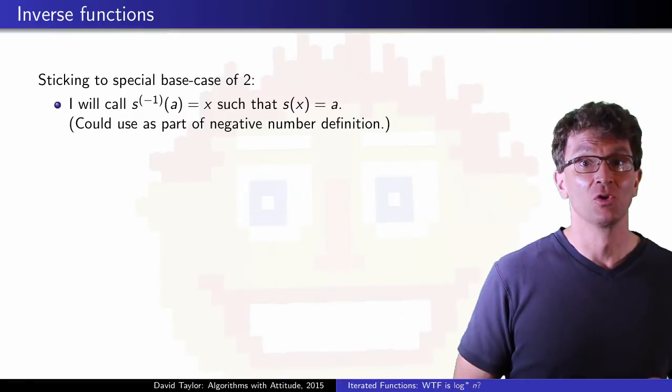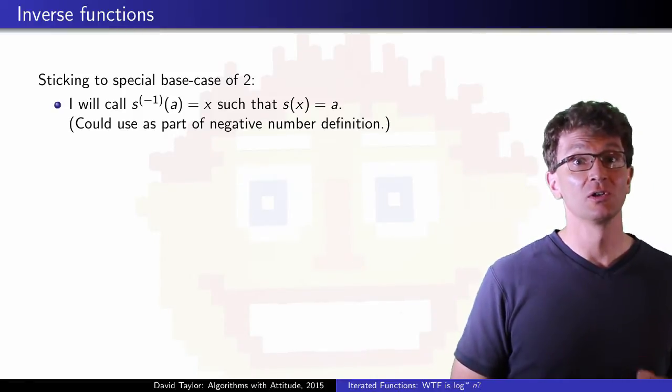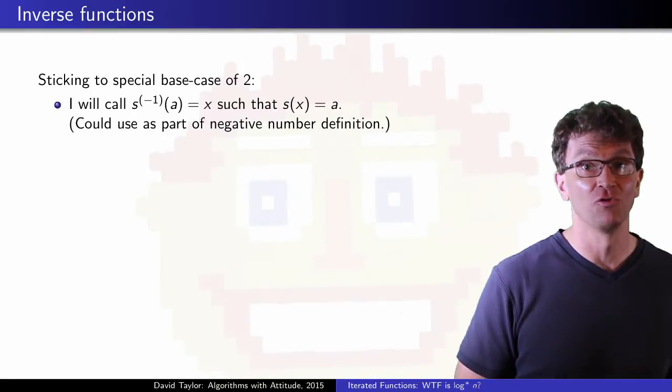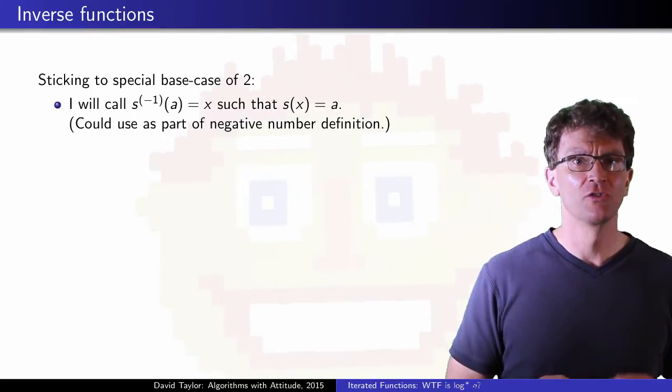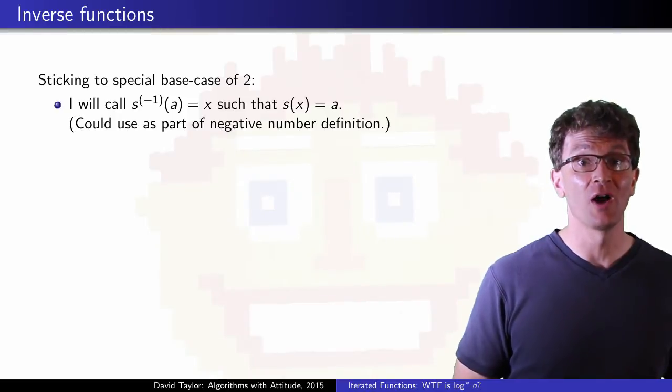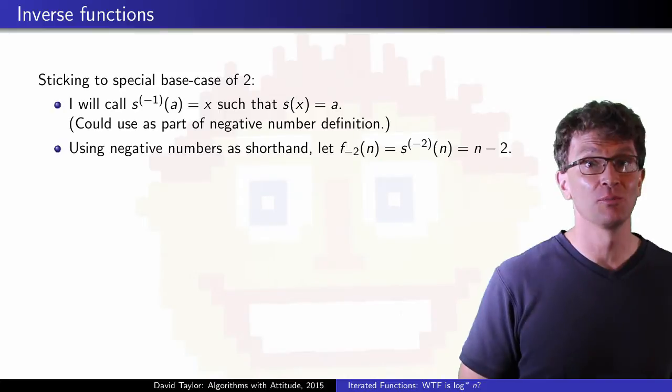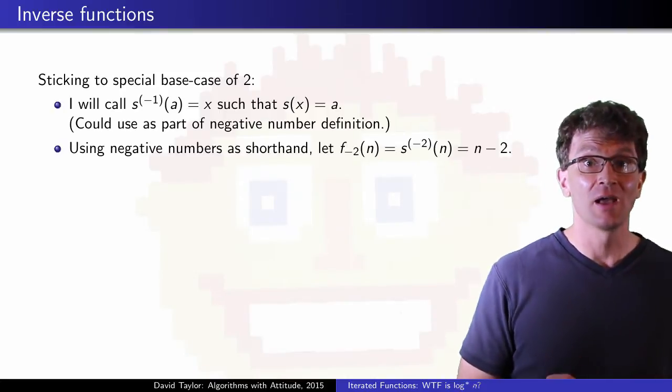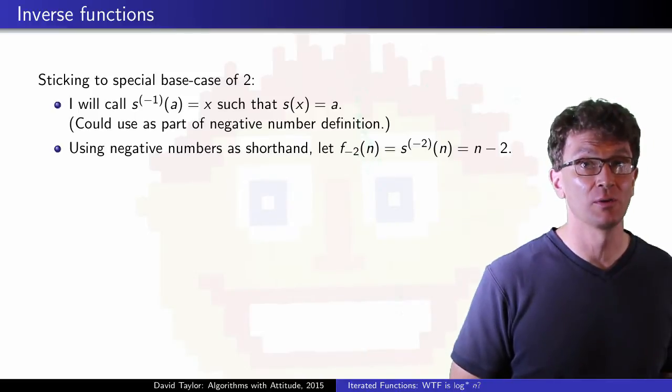Next, we are going to look at some inverses, which can lead to some very slow growing functions. Using notation that's sort of consistent with before, we can define the decrement function. With a few more properties here, we could define negative integers, but that's not the main focus here, so I'll use them without definition.